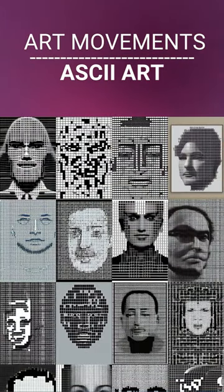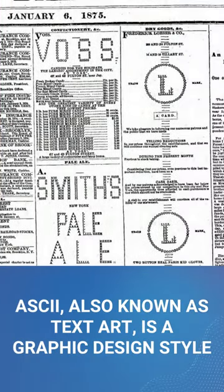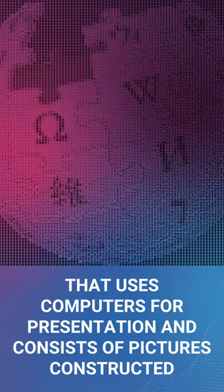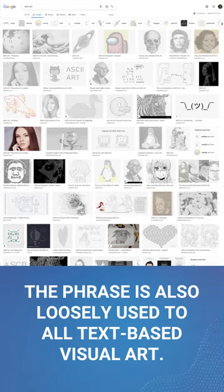I wanted to examine AI's interpretations of the various art movements in this series. ASCII, also known as text art, is a graphic design style that uses computers for presentation and consists of pictures constructed from a total of 128 ASCII characters. The phrase is also loosely used to refer to all text-based visual art.